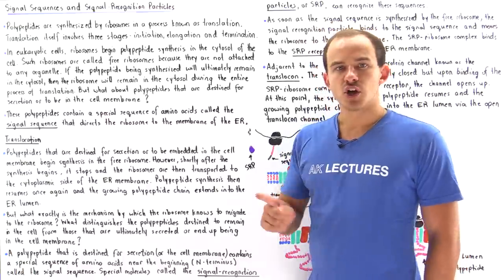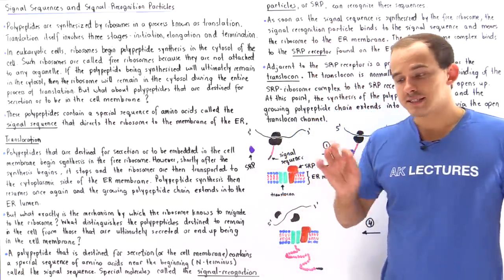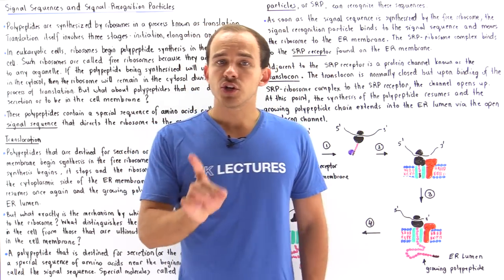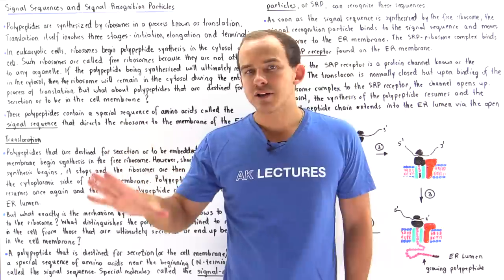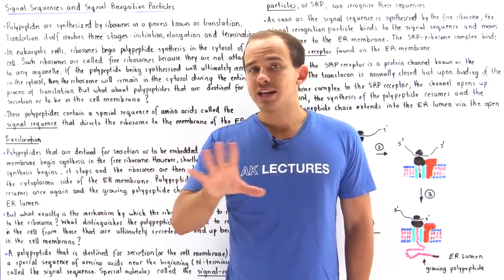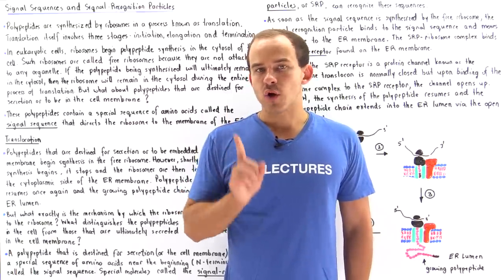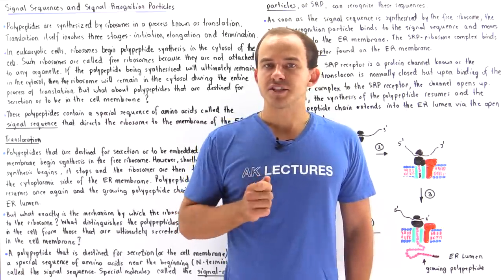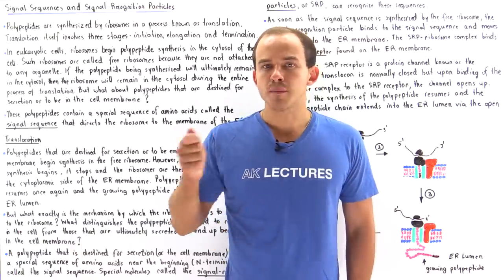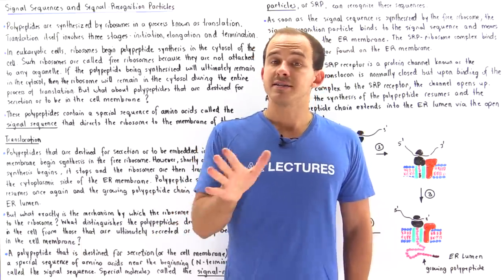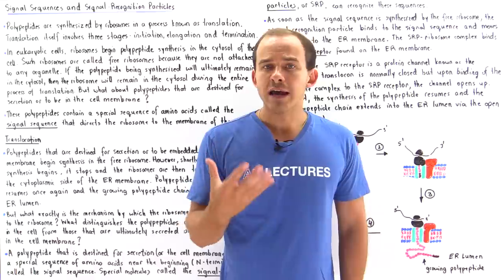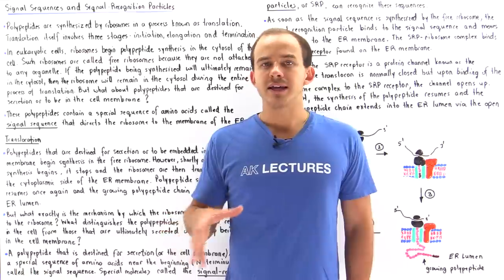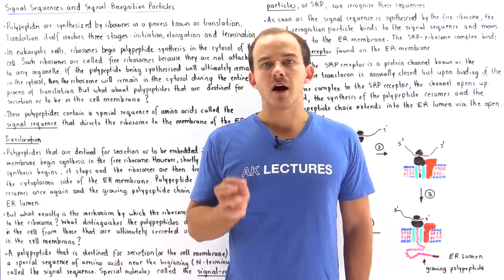In eukaryotic cells, ribosomes begin to synthesize the polypeptide chain in the cytosol. Ribosomes found in the cytosol that are not attached to any organelle are known as free ribosomes. If the growing polypeptide chain is destined to remain inside the cytoplasm, the free ribosome will not attach to any organelle during the entire process of translation.